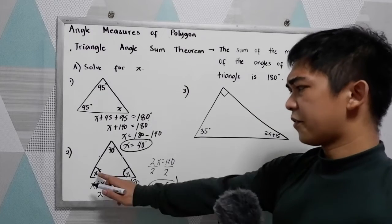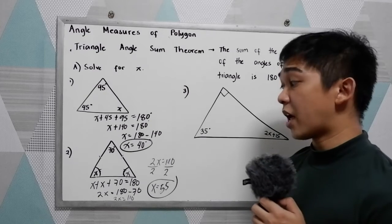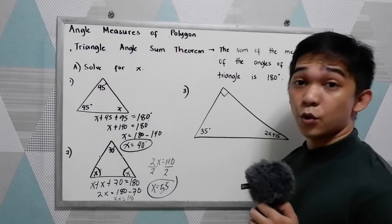So let's check. 55 plus 55, that is 110. Plus 70, 180.